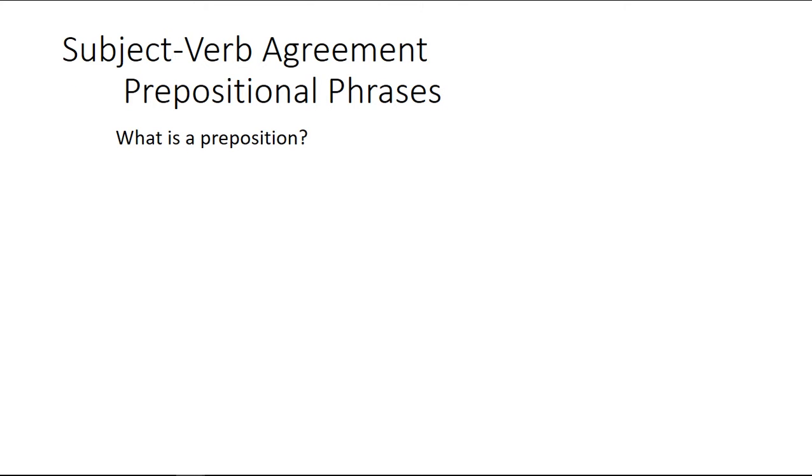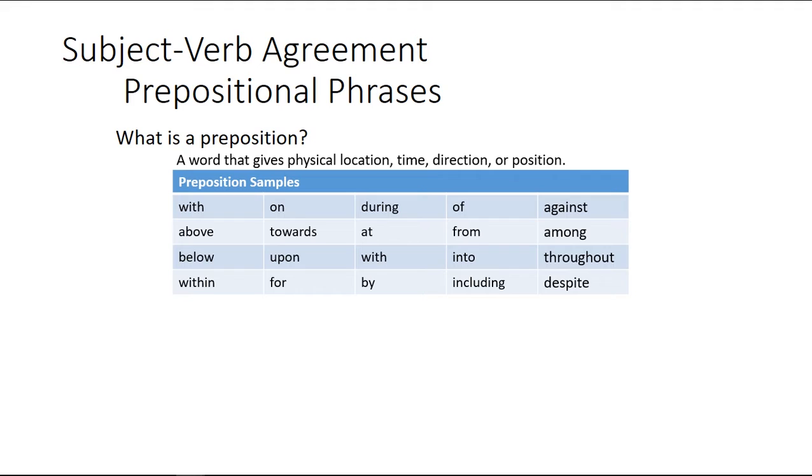Let's go on to subject verb agreement and what does that have to do with prepositional phrases? What is a preposition? It's a word that gives physical location, time, direction, or position. So here's some examples: with, above, below. These are all positions and then to do with time would be upon, once upon a time.